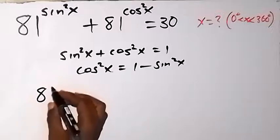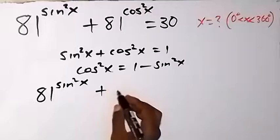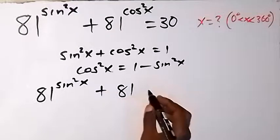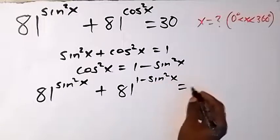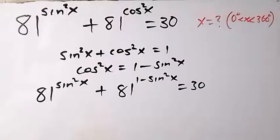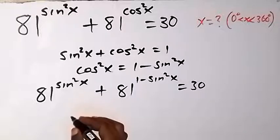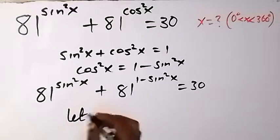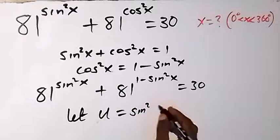So we have 81^(sin²x) plus 81^(1 minus sin²x) equals 30. From here we can use a letter to represent sin²x — let u be equal to sin²x.